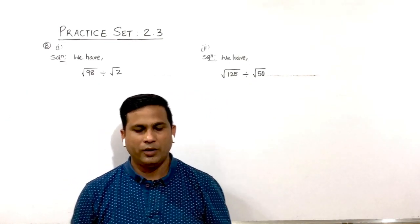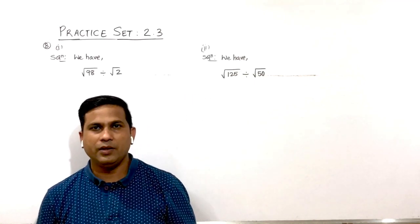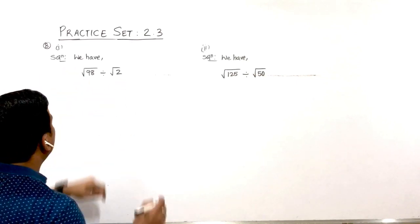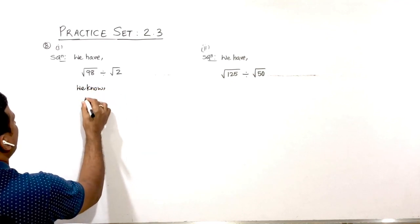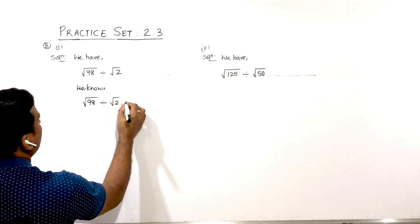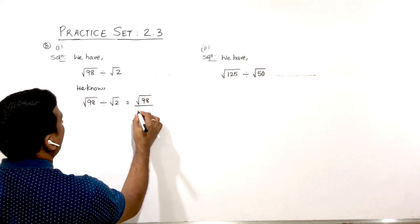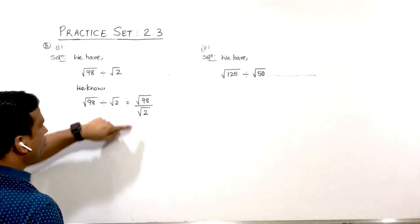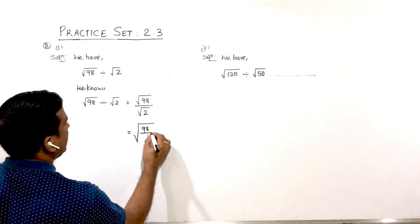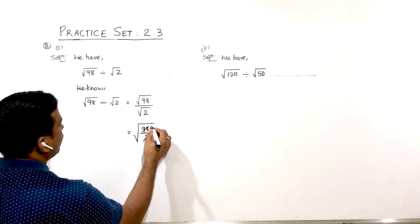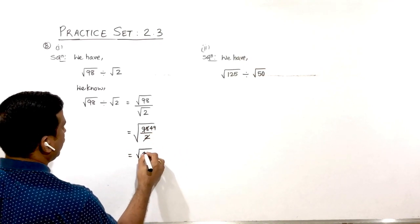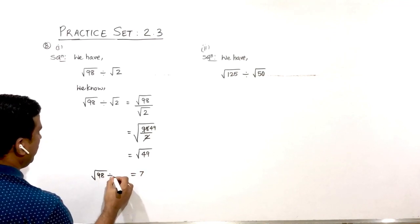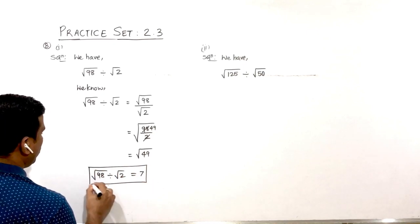Question number 8: divide and write the answers in simplest form. First: √98 ÷ √2. This can be written as √(98/2) since the order of both surds is the same. 98 ÷ 2 = 49, so this equals √49 = 7. Therefore √98 ÷ √2 = 7.